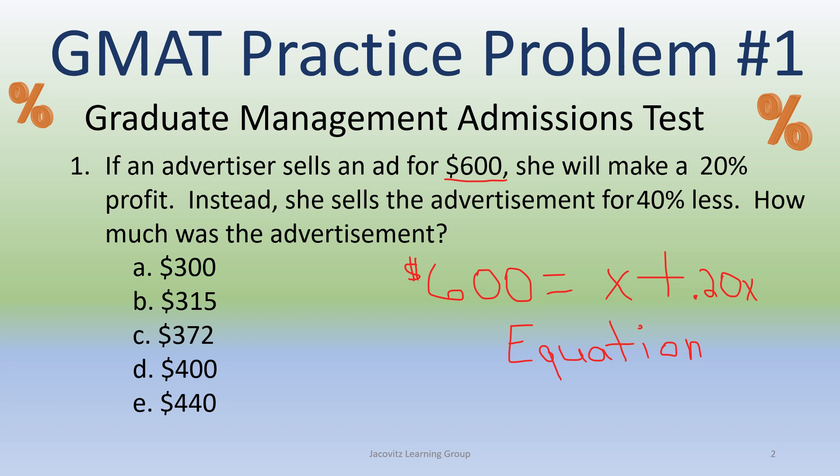This is Graduate Management Admissions Test Problem Number One. Let's take a look. If an advertiser sells an ad for $600, she will make a 20% profit. Instead, she sells the advertisement for 40% less. How much was the advertisement?